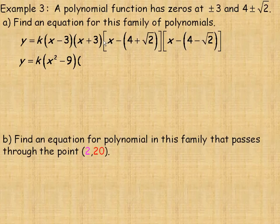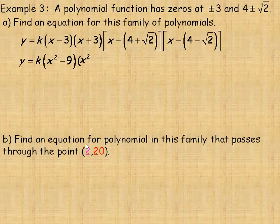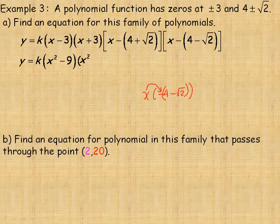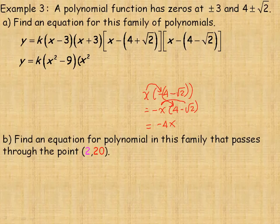Now expanding the next pair: x times x gives x squared. Then multiplying x by negative (4 minus root 2): we get negative x times 4, which is minus 4x, and negative x times negative root 2, which gives plus root 2 times x.